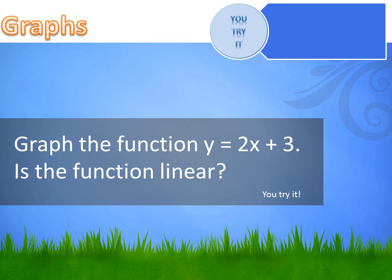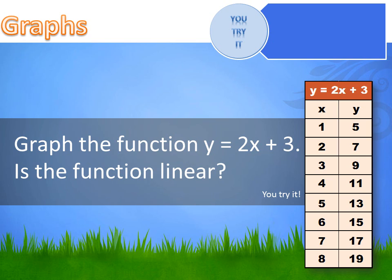We're asked to graph the function Y equals 2X plus 3, and then determine whether this is a linear function. The first thing we need to do is create a table of X values and Y values. We'll input values 1 through 8 for X into the equation and get a corresponding Y value. When we put 1 into the equation, we have 2 times 1, which is 2, plus 3 — we end up with a Y value of 5. We do that for all the X values to get a series of Y values, and then we can graph that.